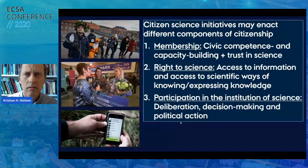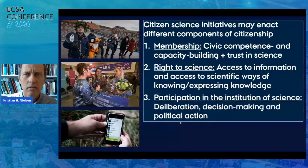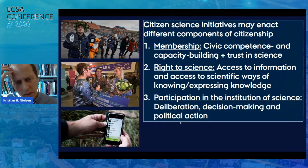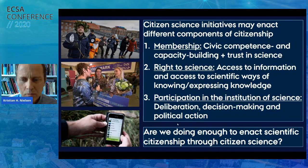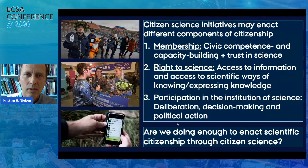Summing up — what does citizen science accomplish through these three examples in terms of enacting citizenship? You can actually find that the three dimensions of citizenship — membership, right to science, and participation in the institution of science — are all in different ways apparent across these different projects. Of course, they don't all enact all these dimensions, but you can see the potential of citizen science to enact the classic dimensions of citizenship in relation to science, not in relation to the nation state. The question we can all ask ourselves: are we doing enough, and should we be doing more to enact scientific citizenship through citizen science?